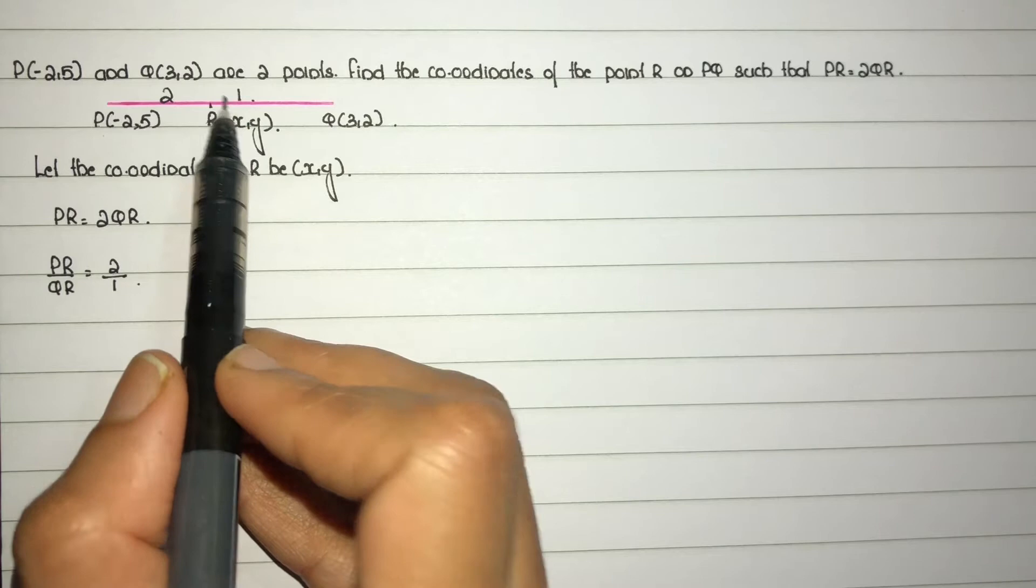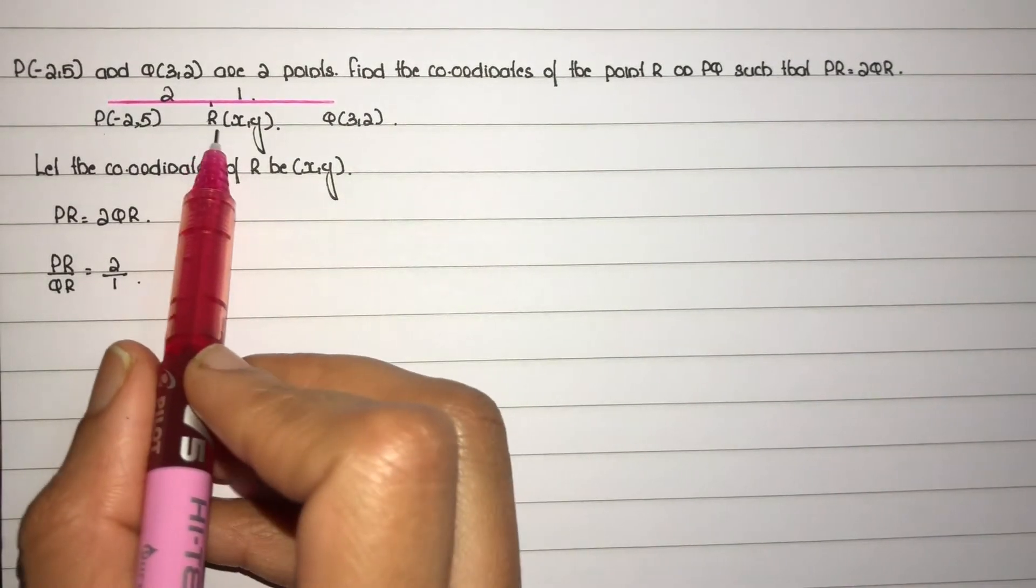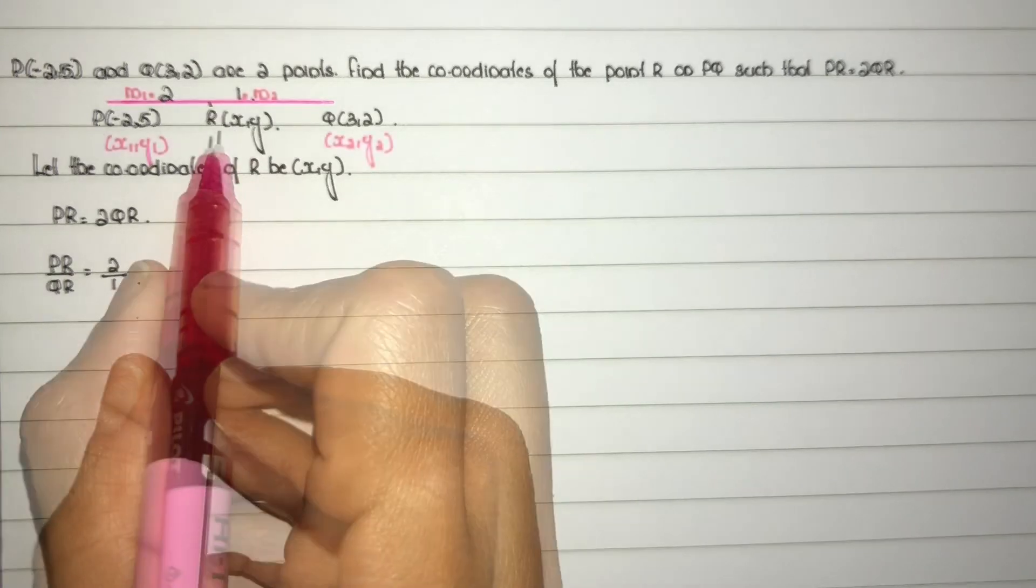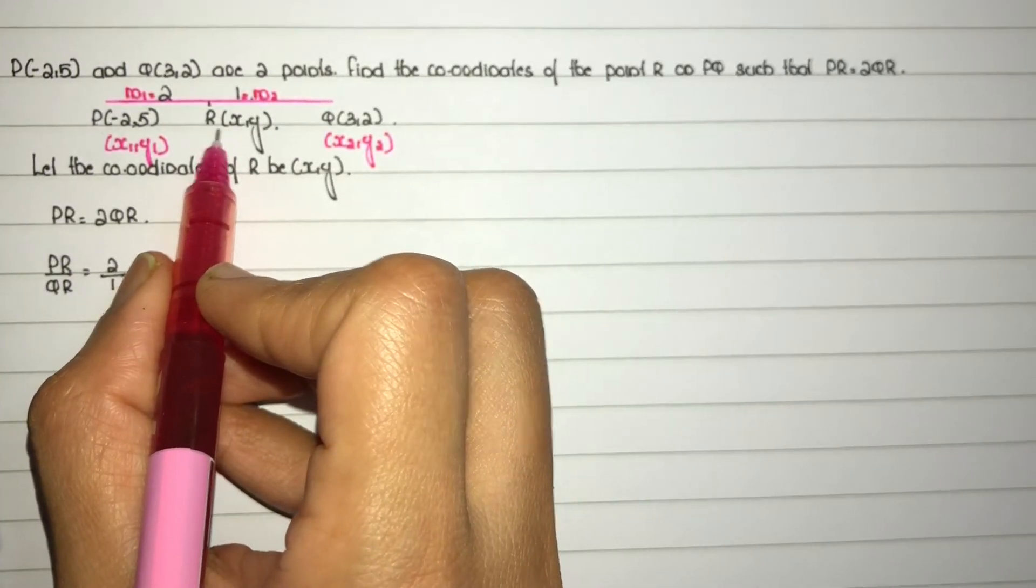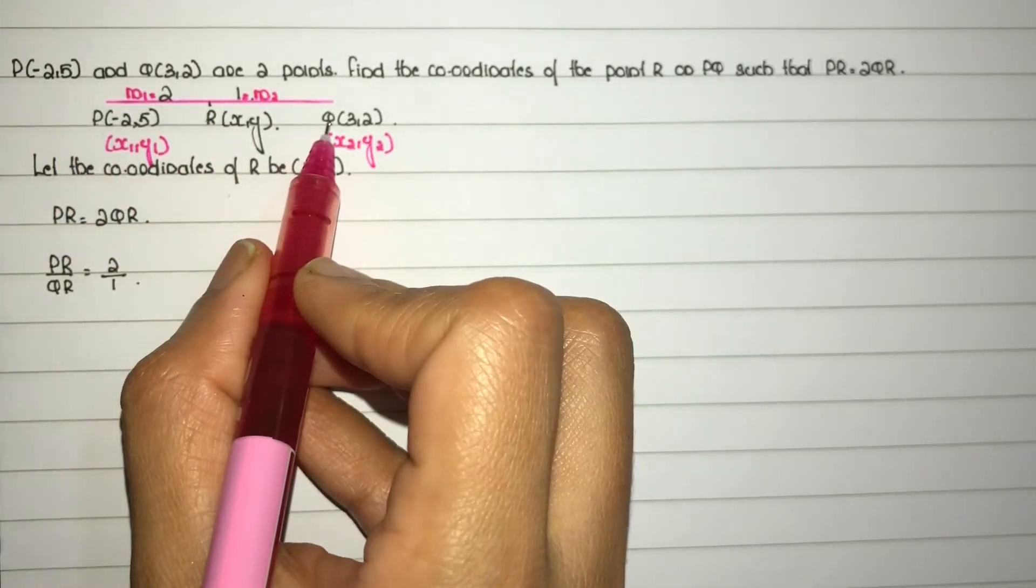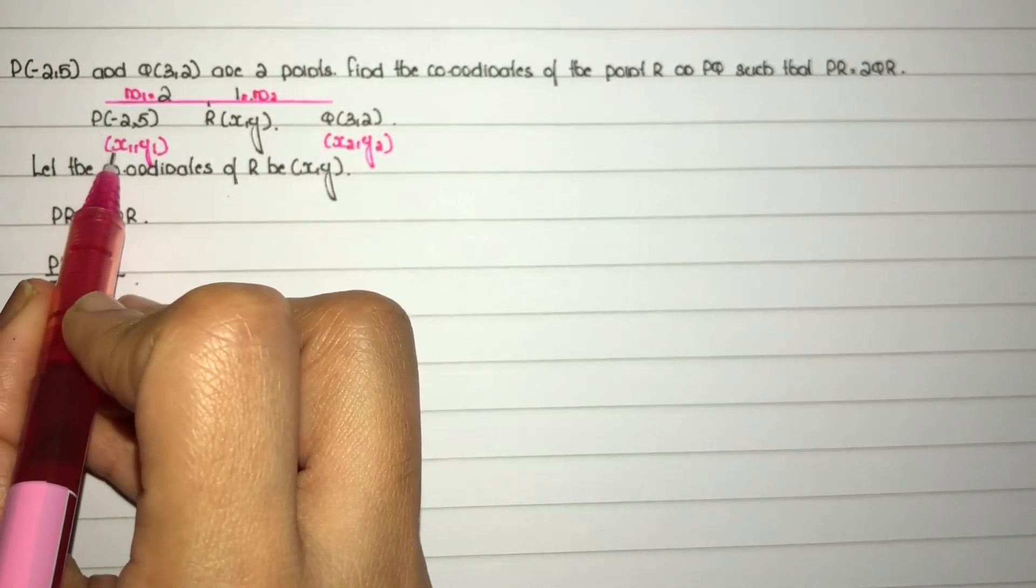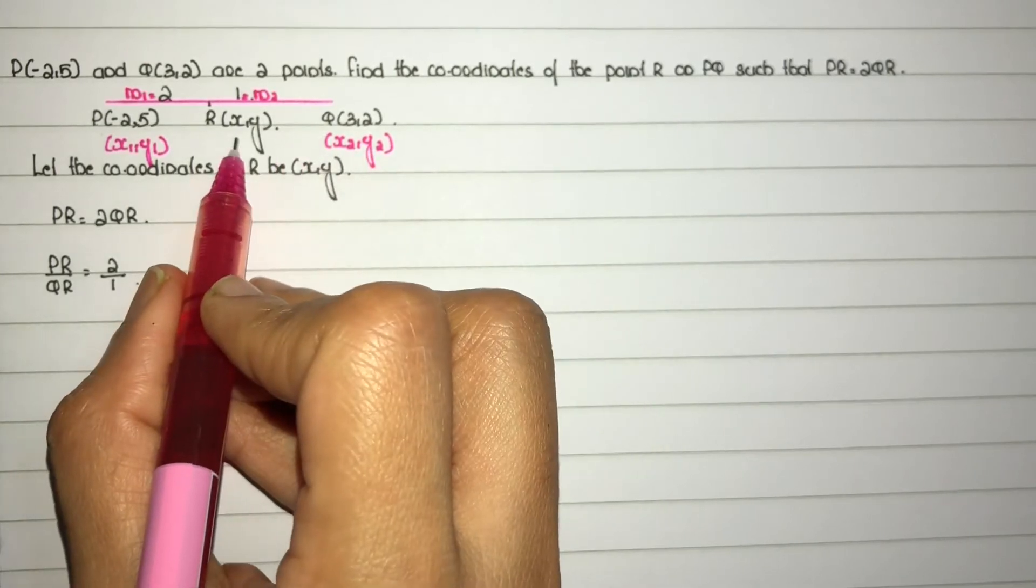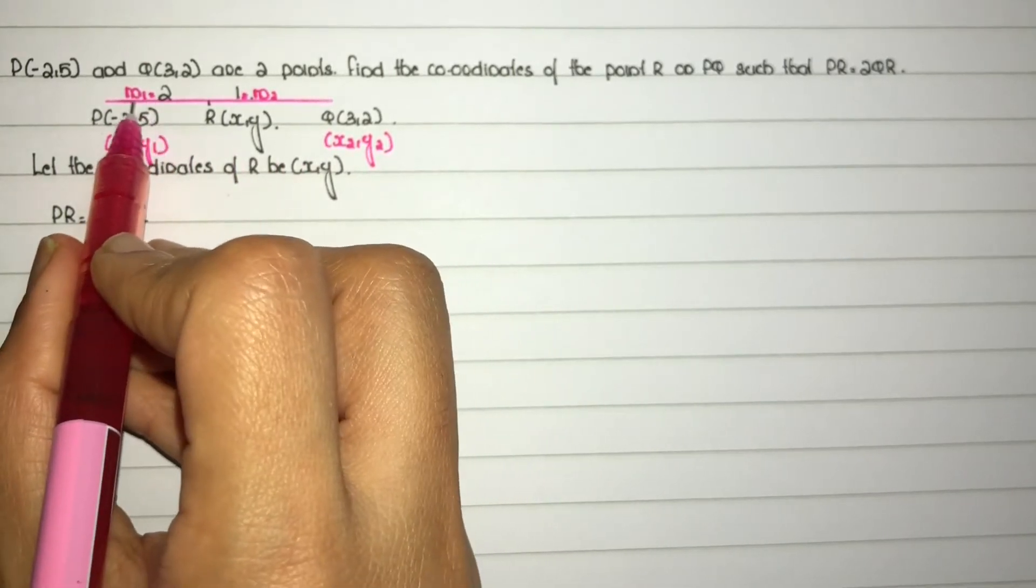In the section formula, we need to find the coordinates of point R which divides the line segment joining the points (x1,y1) and (x2,y2) internally in the ratio m1 is to m2.